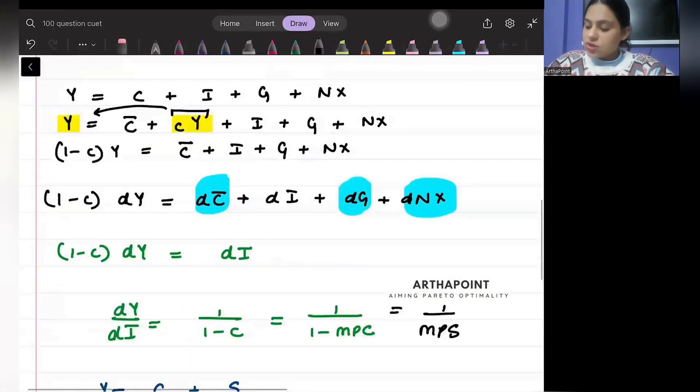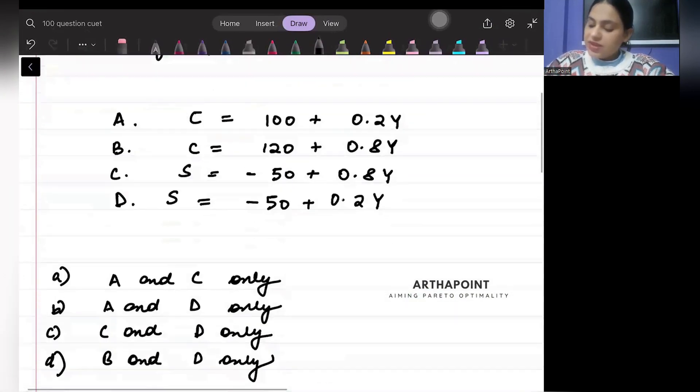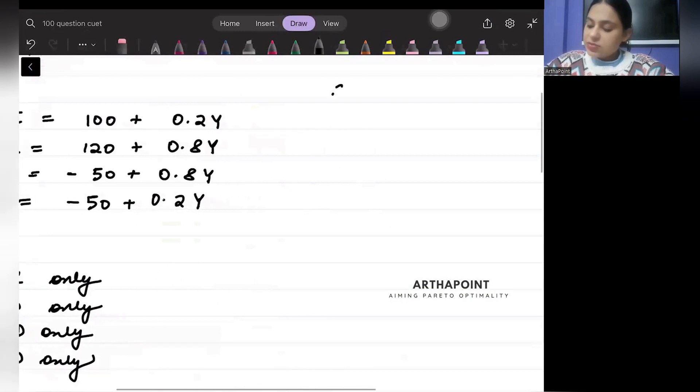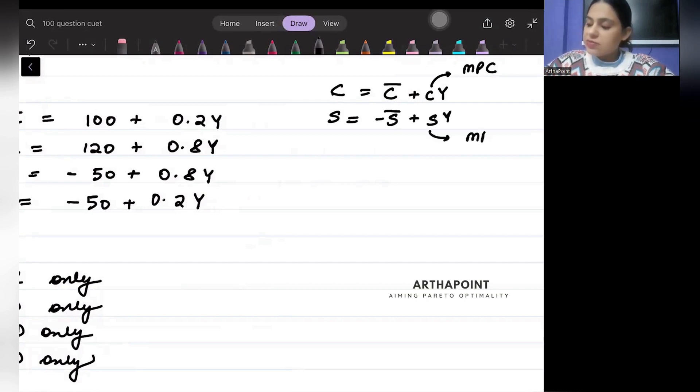Now just come back. When I am writing my consumption function as C bar + cY, so this c is the MPC. And when I am writing my savings function as -S bar + sY, this is the MPS.